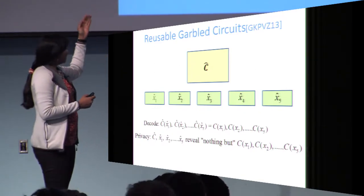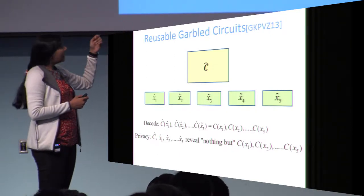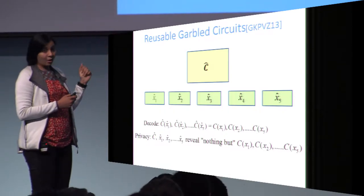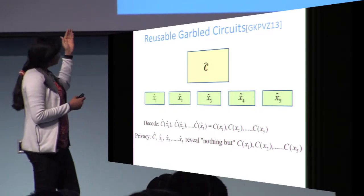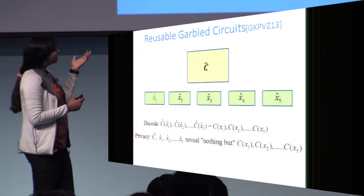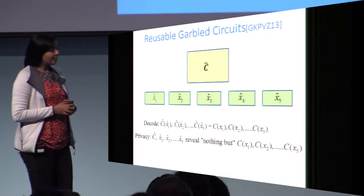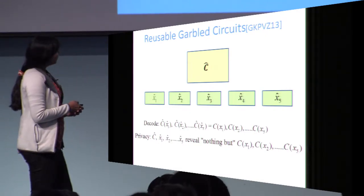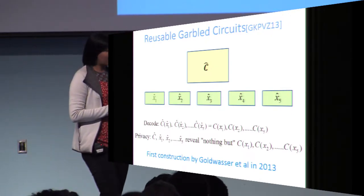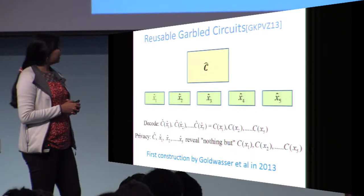If given C-hat and x1-hat, x2-hat, and so on, we would like to recover C(xi) for all i. Privacy would then state that given C-hat and xi-hat, you should learn nothing except the output of the circuit on those values. This was an open problem, but recently there was an elegant solution by Goldwasser, Kalai, Popa, Vaikuntanathan, and Zeldovich.